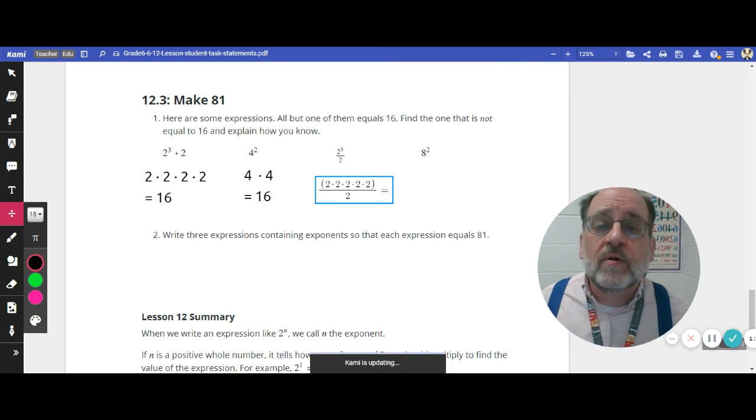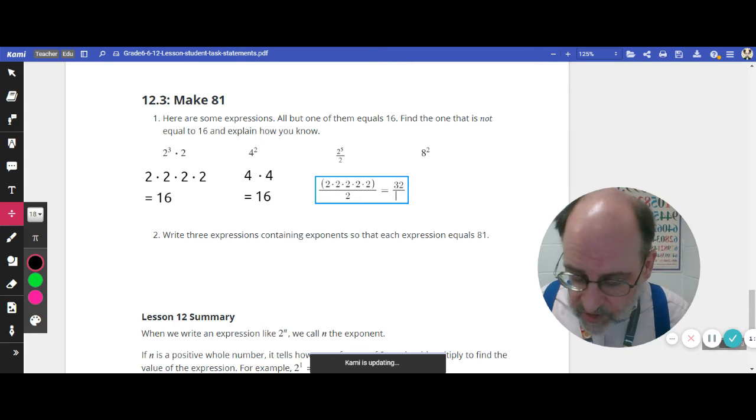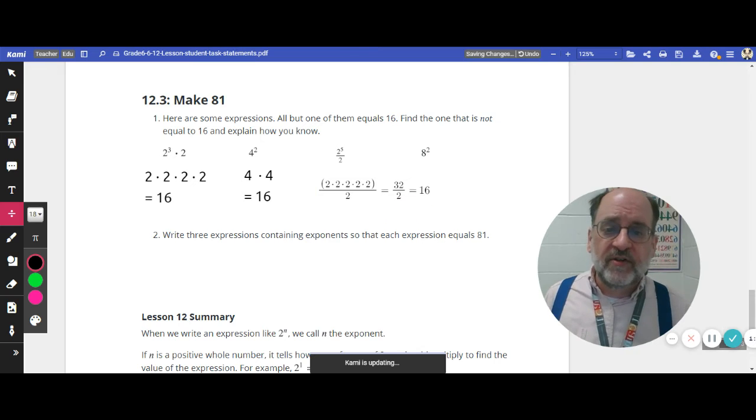All right. What is that equal to? Well, 2 times 2 is 4. Times 2 is 8. Times 2 is 16. Times 2 is 32. So this is 32 divided by 2. That is also 16.